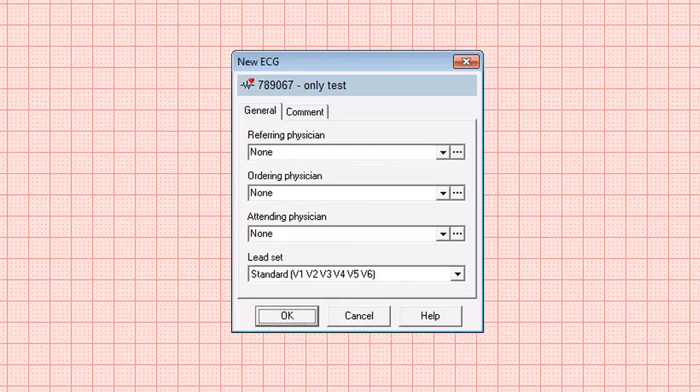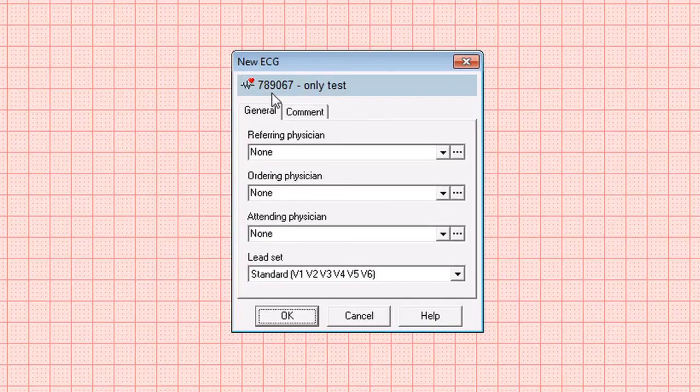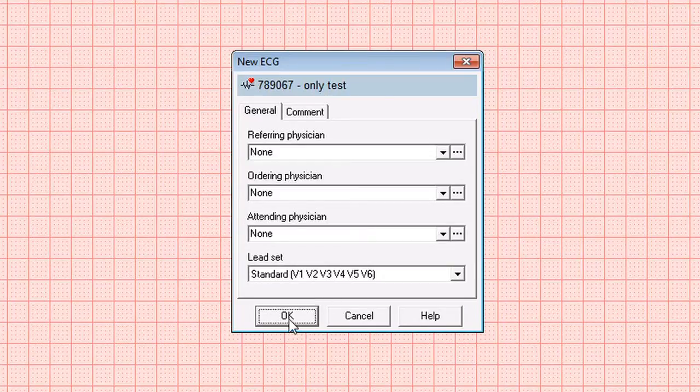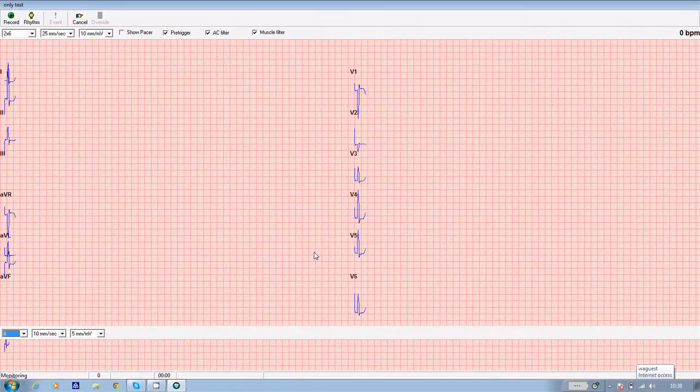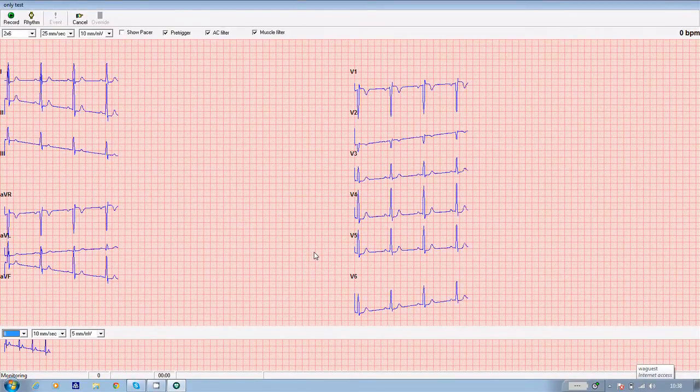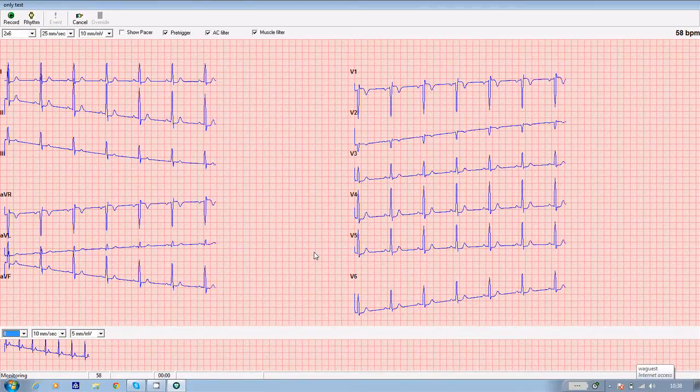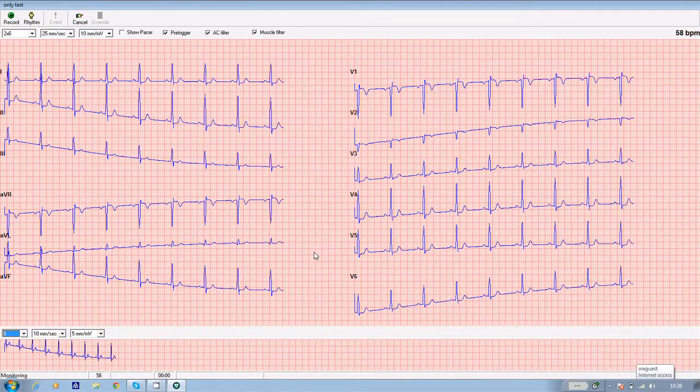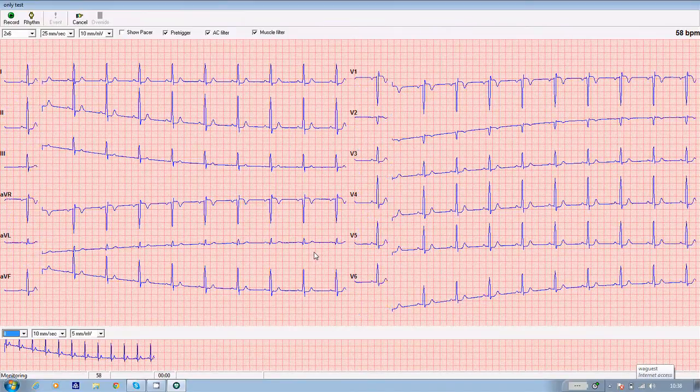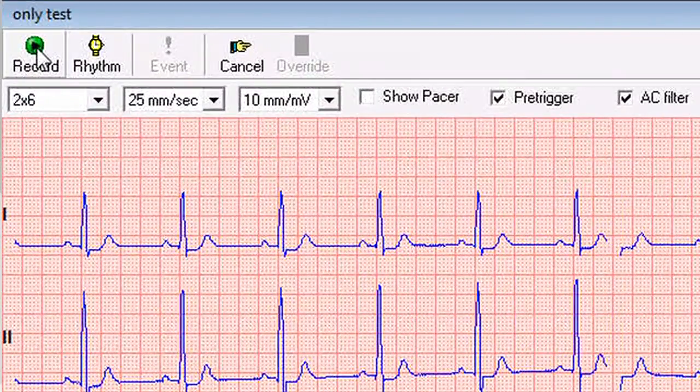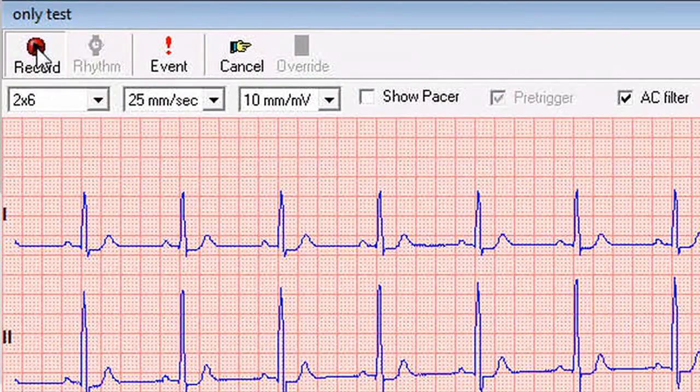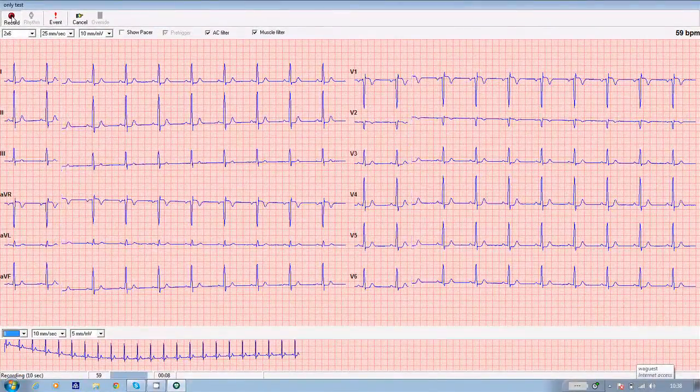The software then loads the module. You get a box up on screen which says new ECG, confirms the number and the name of the patient, and all you need to do to take the ECG is to click OK. The traces will then appear on screen in real time. Now you can wait until these have settled down and stabilized and you're getting a good trace test from each of the patient's leads. And when you're happy with that, you click on record in the top left hand corner of the screen. And from that point, the software records 10 seconds of ECG.